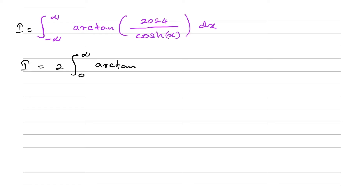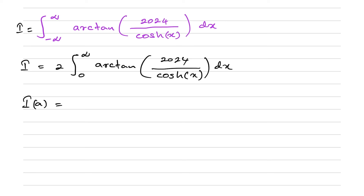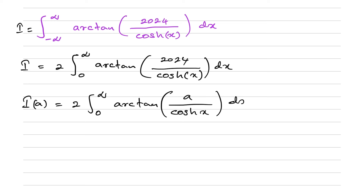So we have I equal to two times the integral from zero to infinity of arctan(2024 / cosh(x)) dx. To use the Feynman technique, I'm going to define I(a) as two times the integral from zero to infinity of arctan(a / cosh(x)) dx, replacing 2024 with the parameter a.